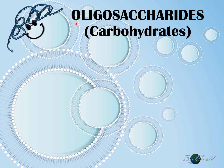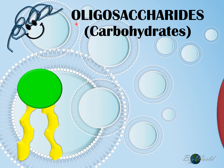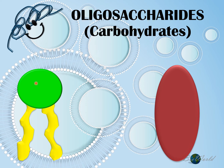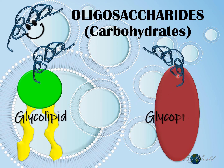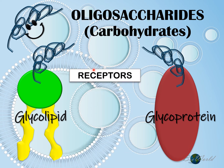Now we will look at the role of the oligosaccharides. There are two types. One is positioned on the hydrophilic heads of the phospholipids, called glycolipids. The other is on the hydrophilic end of the protein, called glycoproteins. Keep in mind that the oligosaccharides are positioned on the surface facing the extracellular fluid. So this makes them suitable to function as receptors.